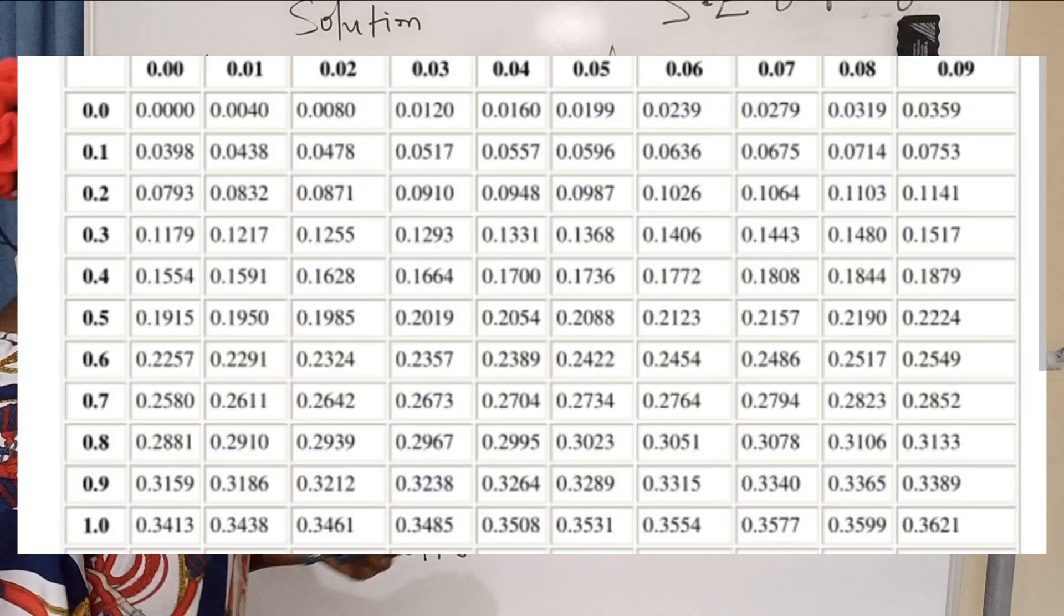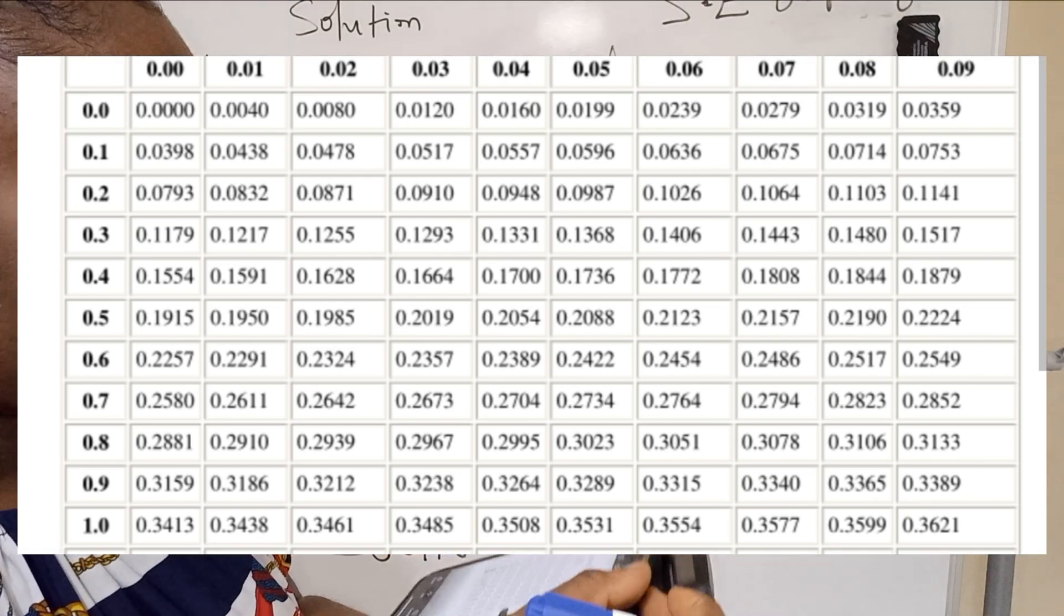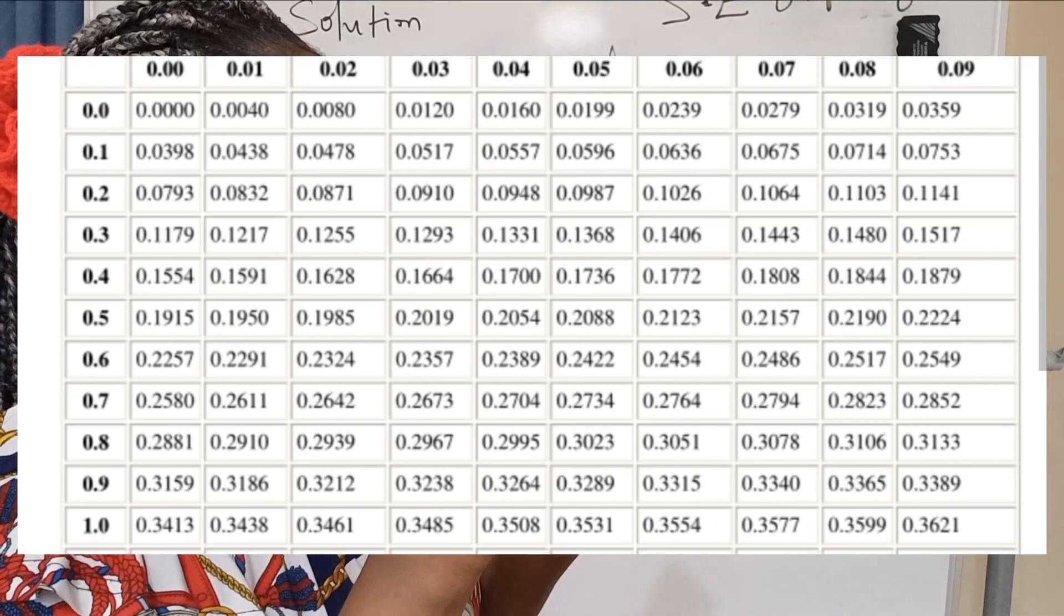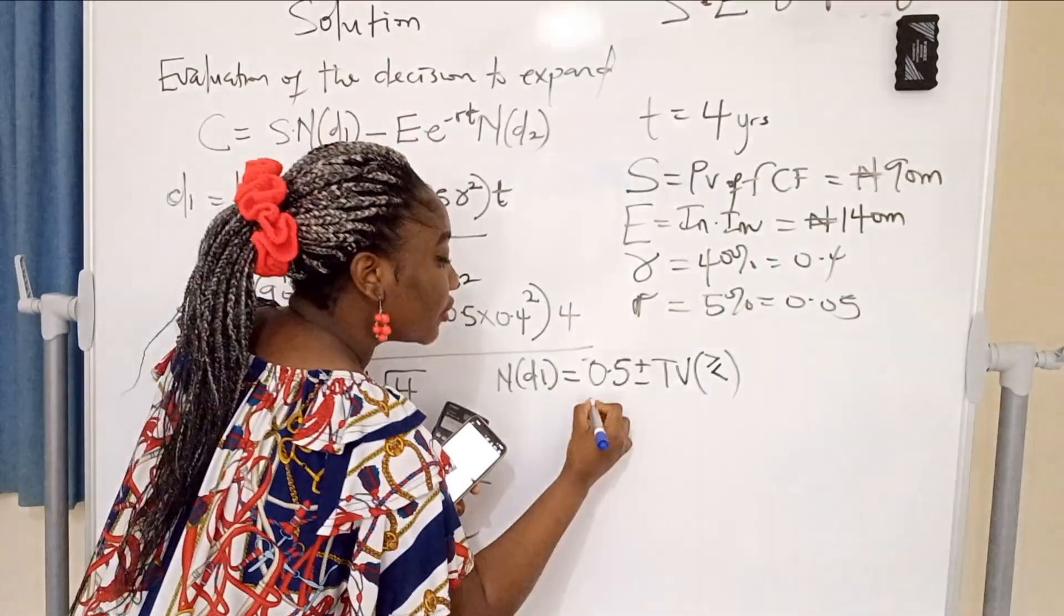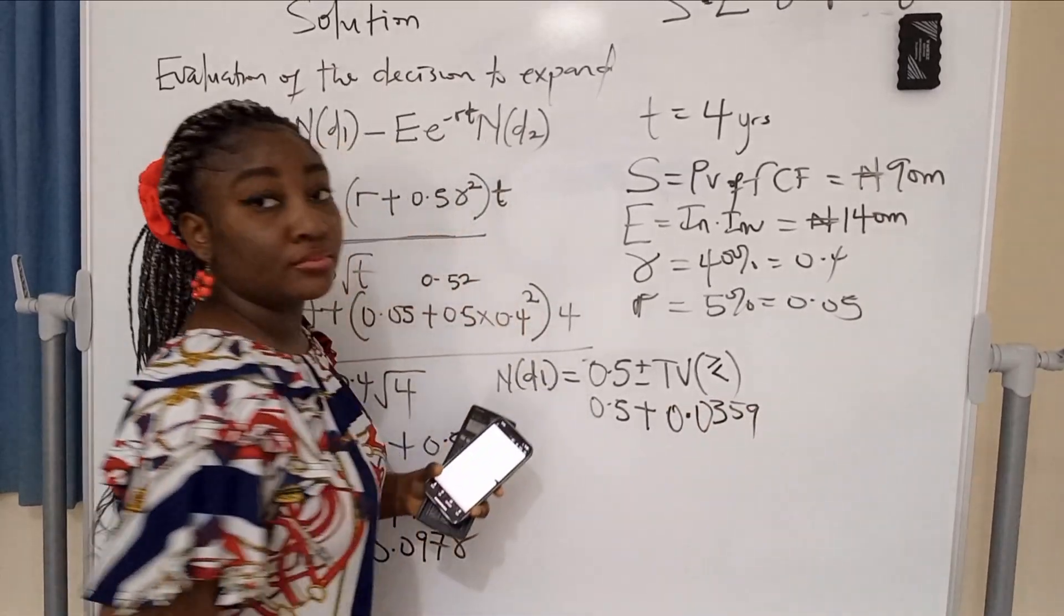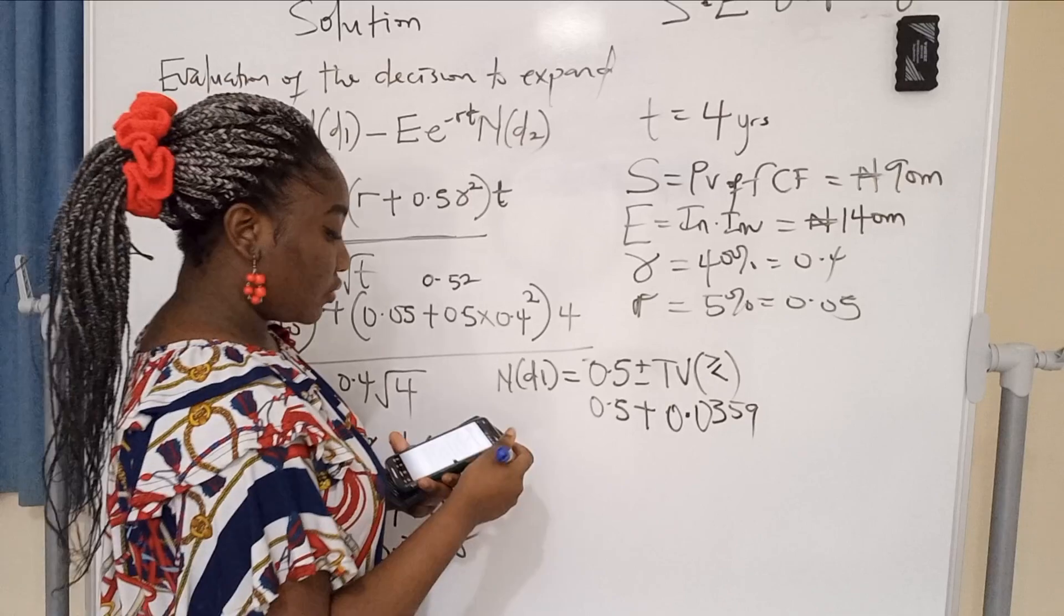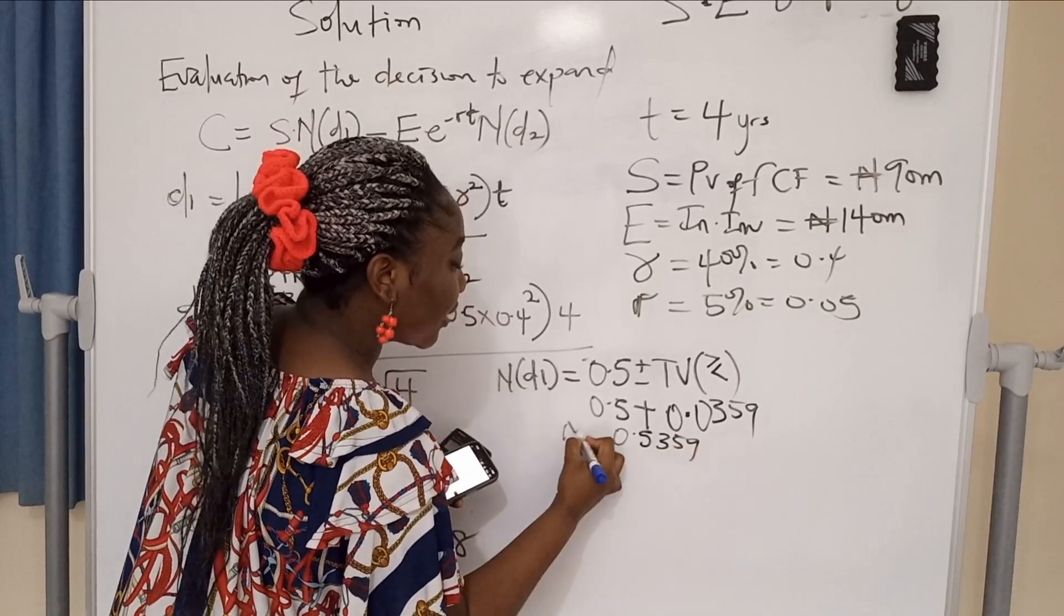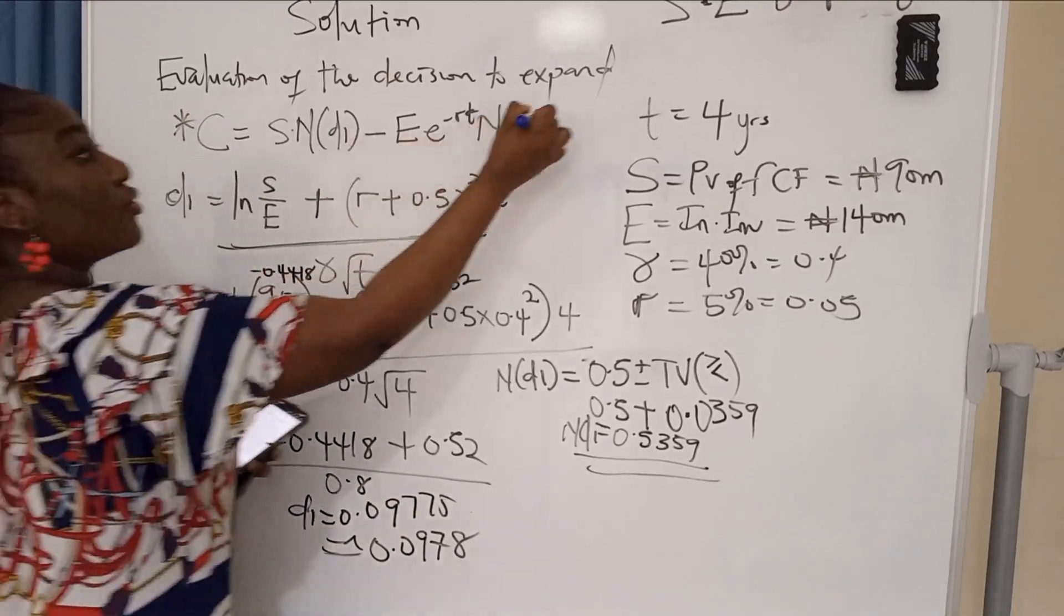I have my phone here. What do we check? 0.0 under 0.09. I've seen the 0.0 line under 0.09. At that point where it intersects, you have 0.0359. So that's your table value. You have 0.5 plus 0.0359. We are using plus because it's a positive. If it was a negative, we use minus. So when you have this, you get 0.5359 as your N(d1).